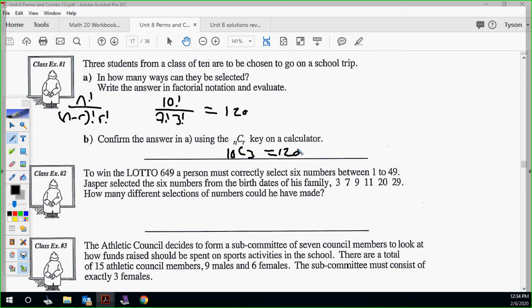To win the lotto 649, a person must correctly select six numbers, 1 to 49. Jasper selected the six numbers from the birthdates of his family, 3, 7, 9, 11, 20, and 29. How many different selections of numbers could he make? Just so you know, the reason it doesn't matter in the lottery is because when you buy a lottery ticket, they always go in sequential. So it doesn't matter where the number's at. If the number comes up, you hit it. It doesn't matter where your number is.